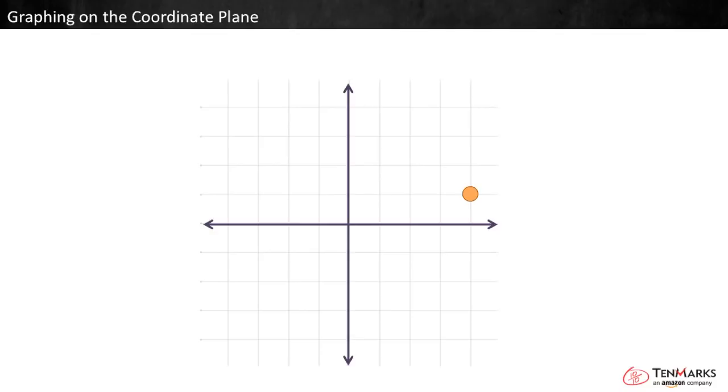In geometry, a grid like this is called a coordinate plane. We use it to describe location so precisely that only one point fits the description.